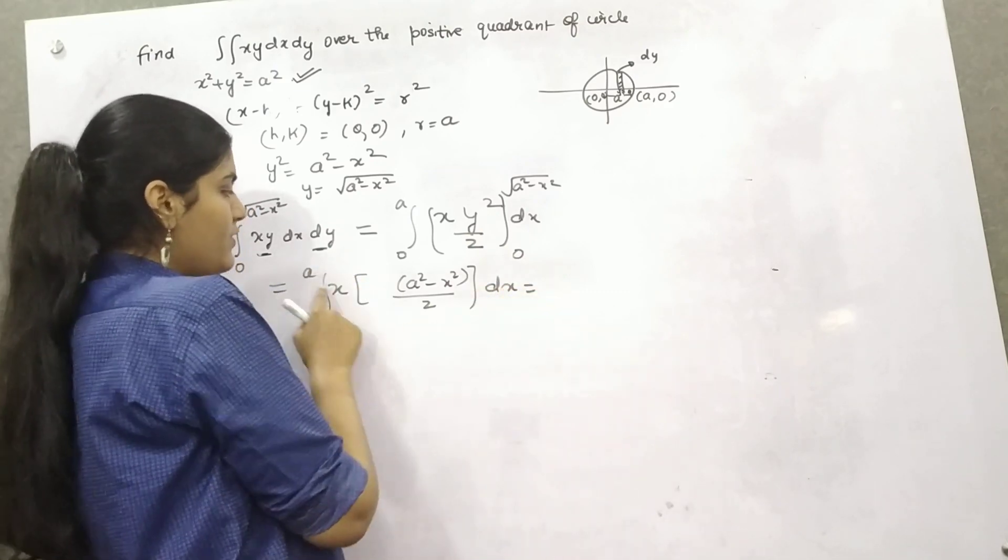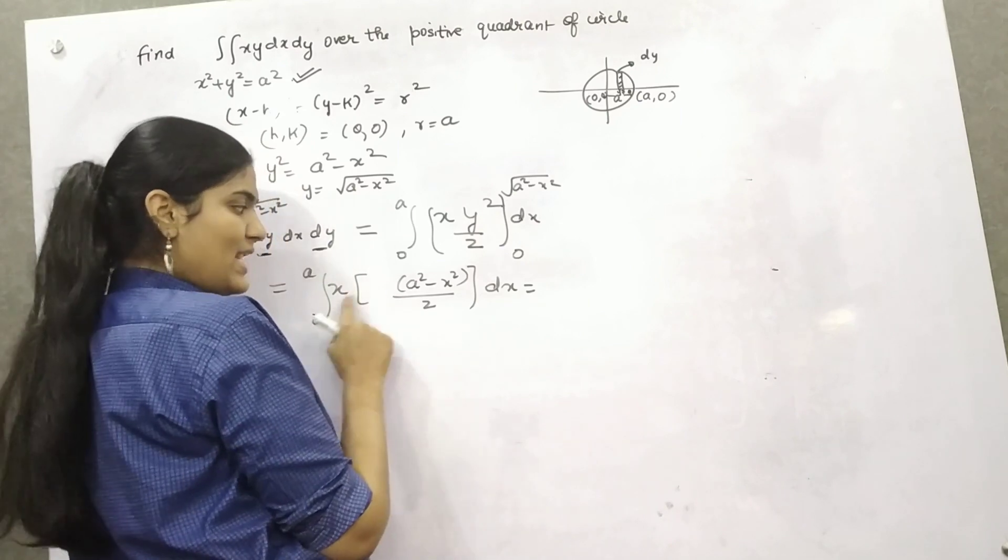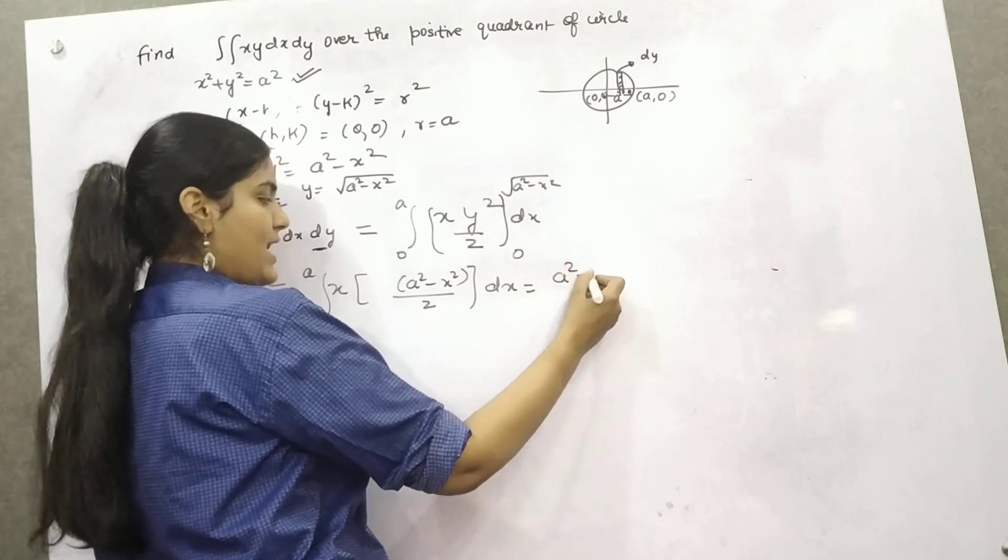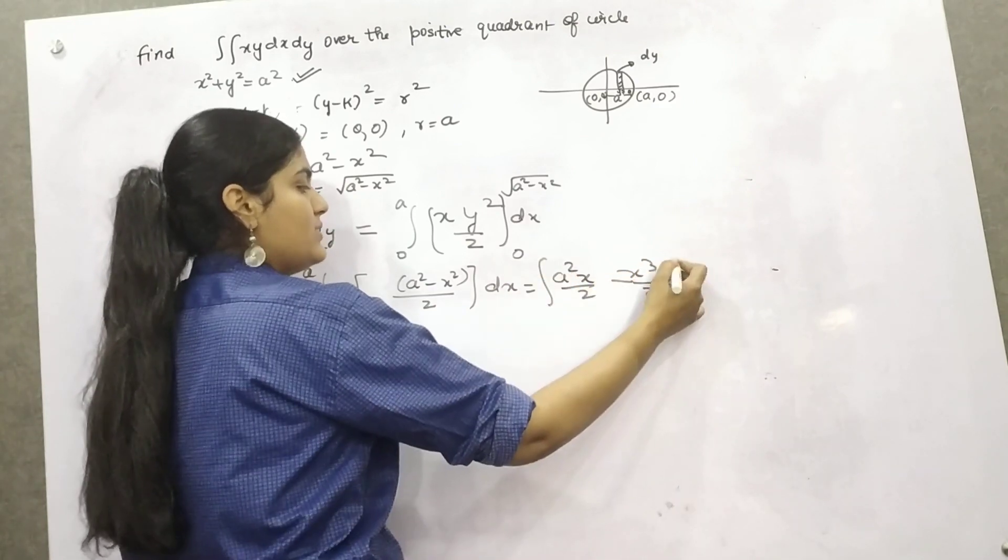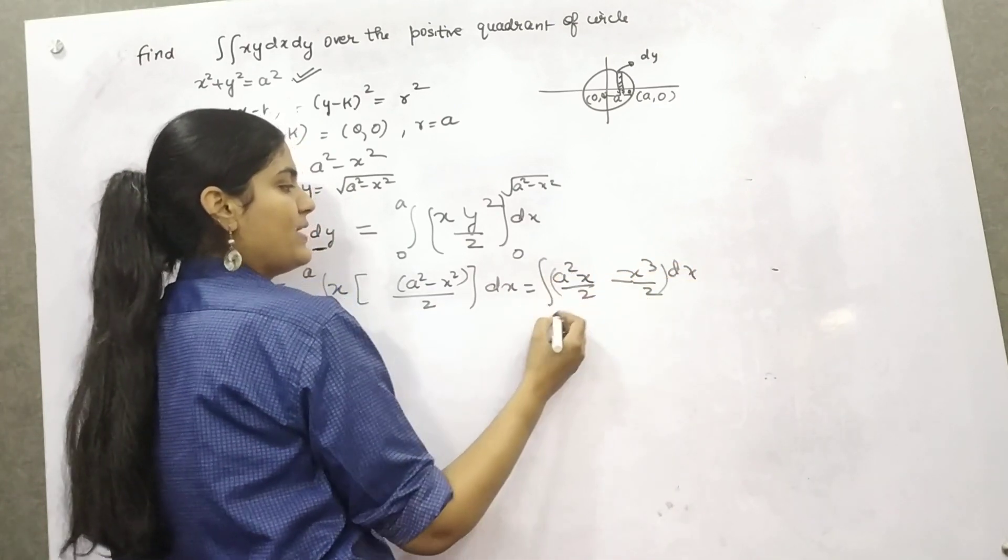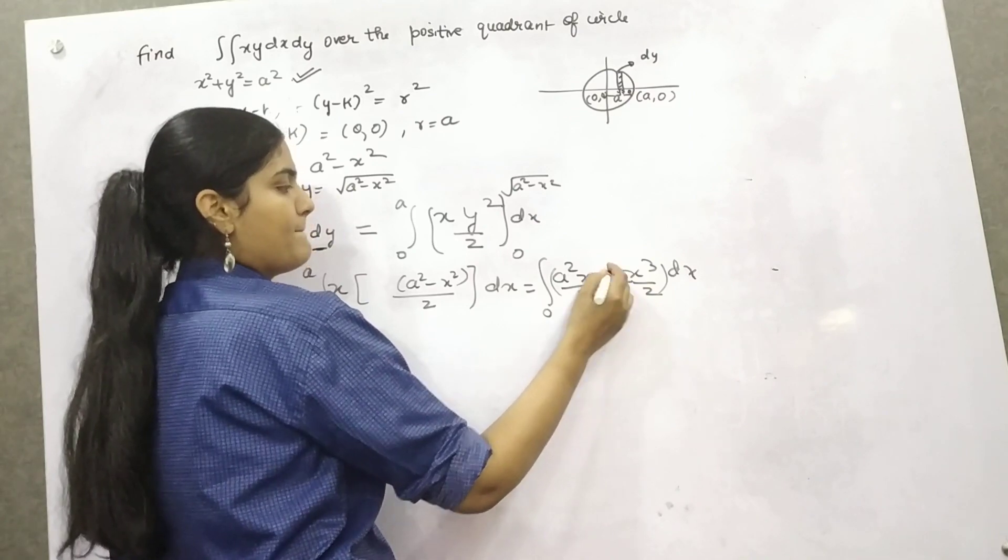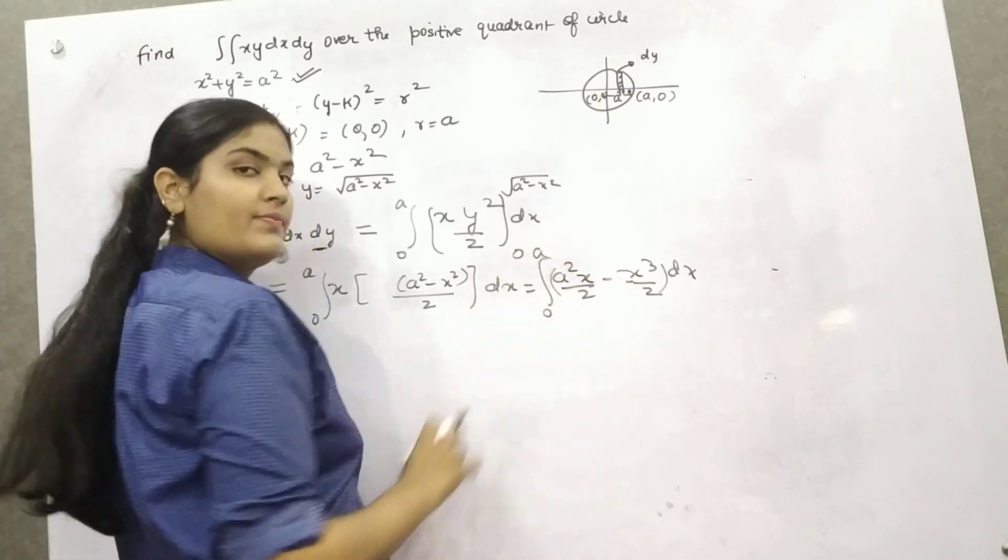Limit 0 to a. So now, if you put, you can expand it, a square x by 2 minus x cube by 2, now you need to integrate it with respect to dx. From 0 to a.